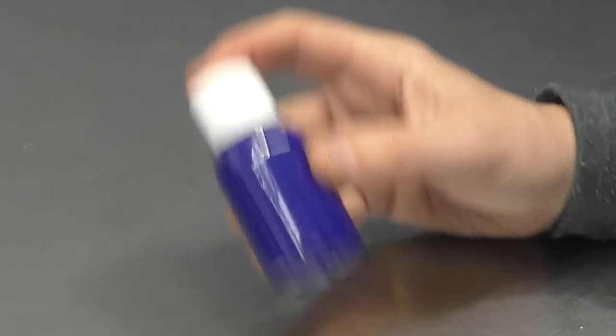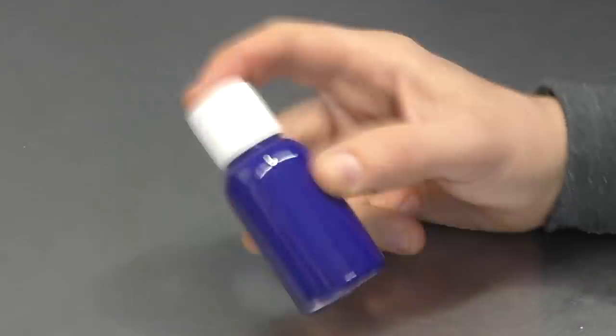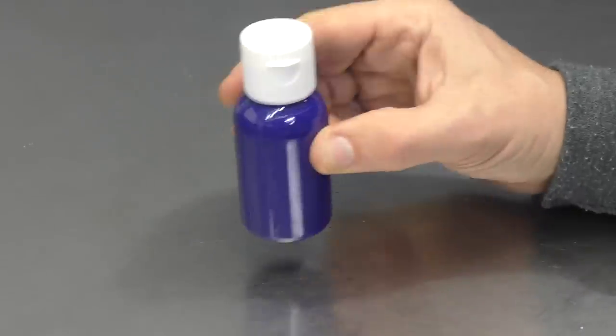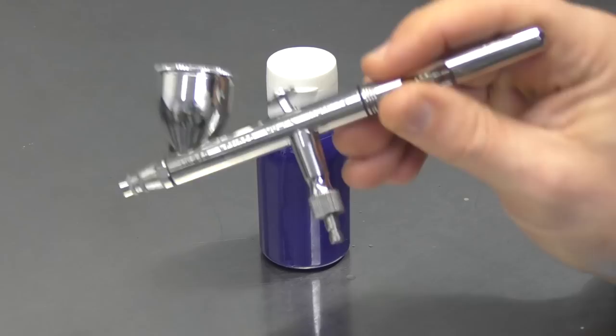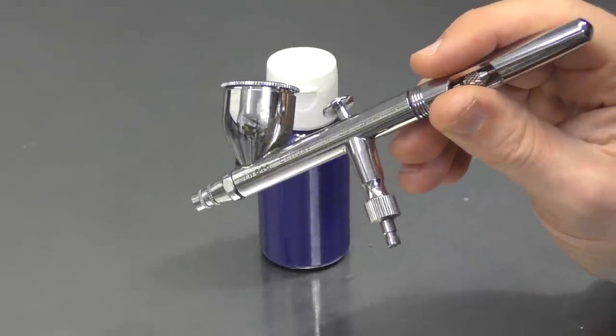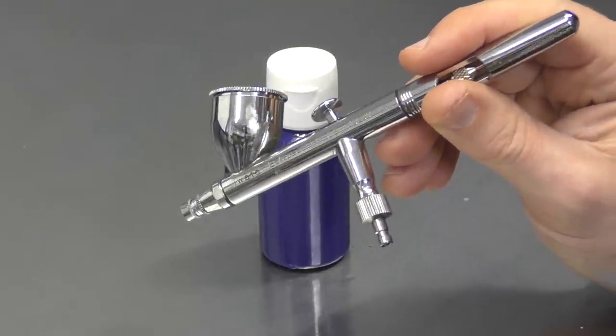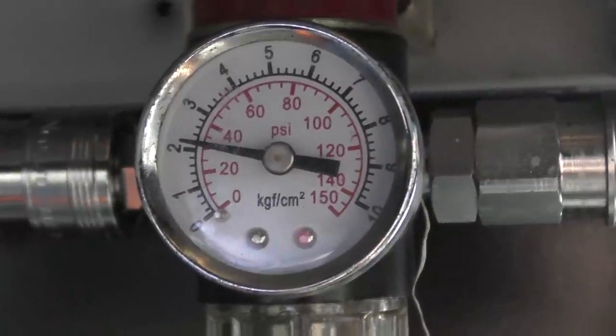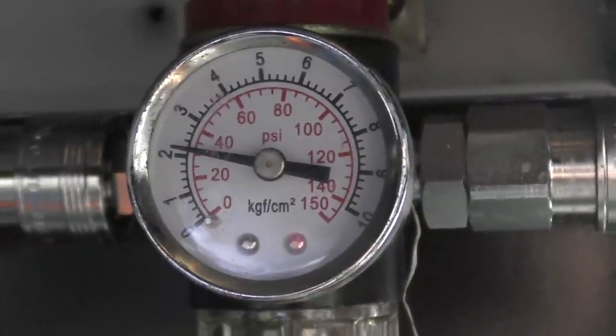So very important to always shake the paints with the water-based products. And we're going to run this ratio in the Iwata Eclipse. This runs a 0.35 mil needle nozzle setup, and we're going to set the pressure to 30 PSI. You can see there, I've set it at 30 PSI. So we're ready to go with some tests using the Eclipse.